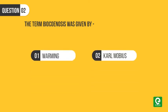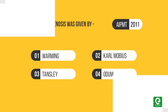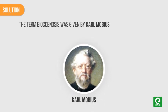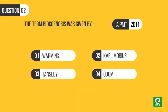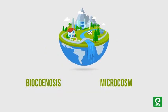Question two: The term biocenosis was given by — one, Warming; two, Karl Mobius; three, Tansley; or four, Odum. This question was asked in AIPMT 2011. Solution: The term biocenosis was given by Karl Mobius in 1877. It defines an association of different organisms forming a closely integrated community. Hence, option two is the correct answer.